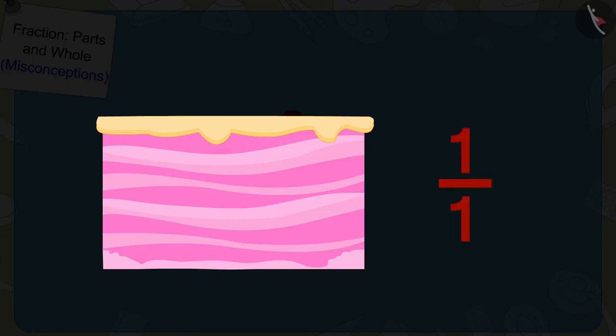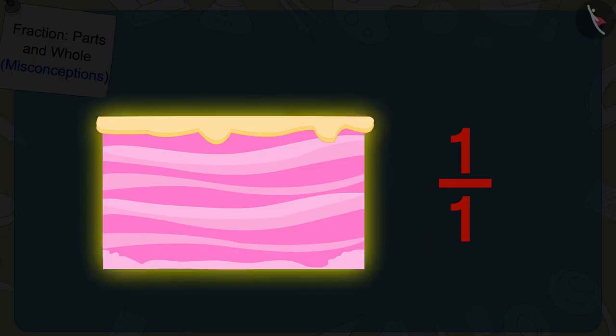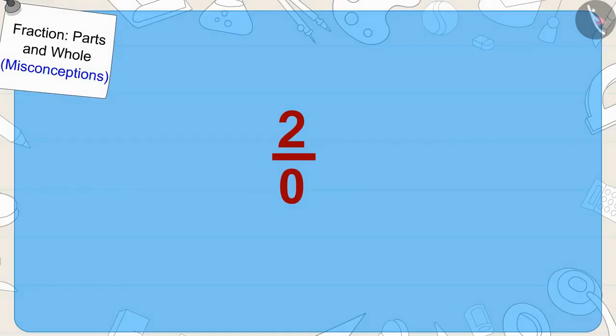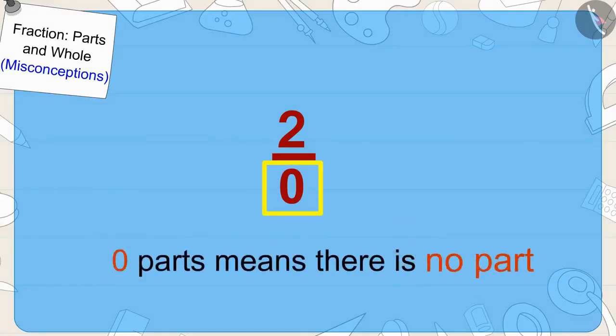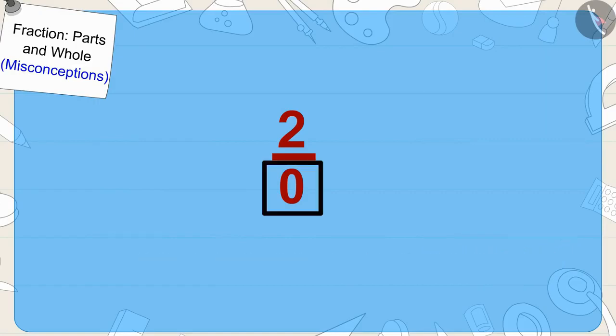Like if we have this cake, we can write it as one upon one, meaning this whole cake is one part and we are taking that whole portion. Zero parts means there is no part, and when there is no part, then how can we take two parts from it?